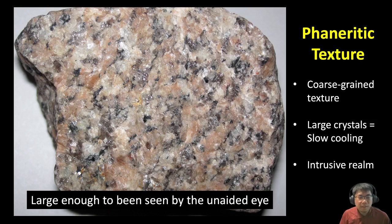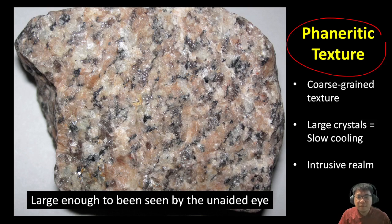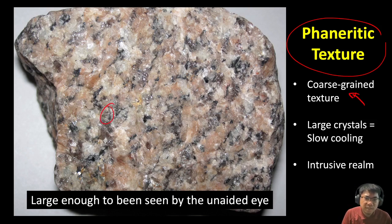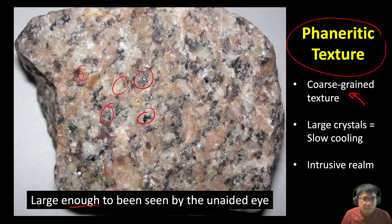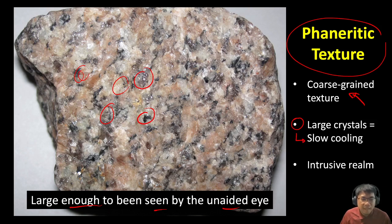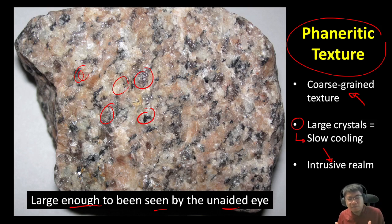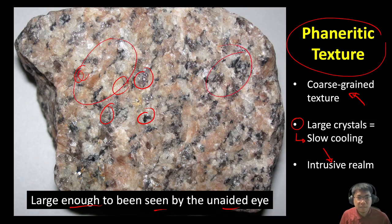In contrast to extrusive rocks, intrusive rocks form what we call phaneritic texture. Phaneritic texture is completely the opposite of aphanitic texture because it consists of coarse-grain texture. All the minerals in these rocks are identifiable with our eyes — they are large enough to be seen. Large crystals mean these rocks cooled very slowly, and slow cooling can only occur within the intrusive realm, meaning only inside the earth. Slow cooling allows minerals to grow big, and therefore produces a very coarse-grain texture.